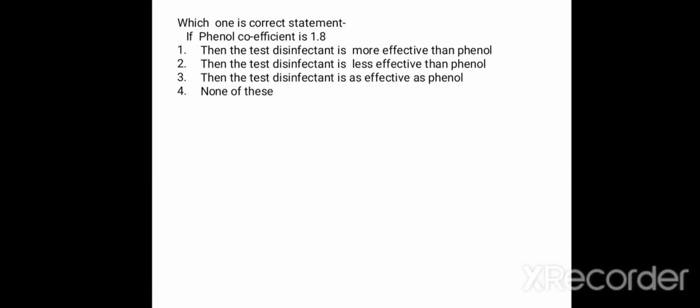Next, which is the correct statement? If phenol coefficient is 1.857 — Option 1: the test disinfectant is more effective than phenol. Option 2: the test disinfectant is less effective than phenol. Option 3: the test disinfectant is as effective as phenol. Option 4: none of these. The correct answer is Option 1 — since the phenol coefficient is more than 1, the test disinfectant is more effective than phenol.